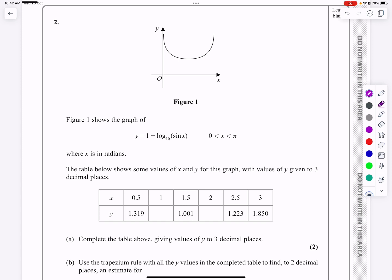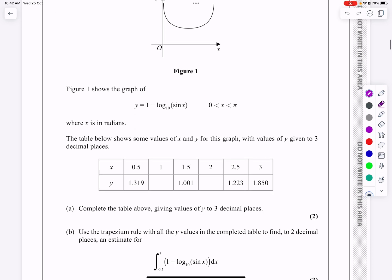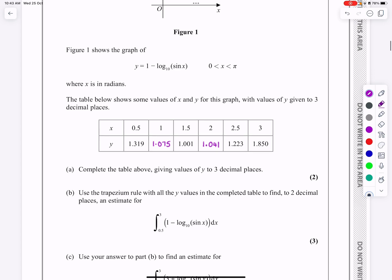It says we've got this function here, 1 minus log base 10 sine x, and for part a, it says, can we just fill in these two values using that function? So that's not difficult. If you do 1 minus log 10 sine 1, remembering that the angle is in radians, we get 1.075 there, and if we do the same thing with 2, we get 1.041 there. Just make sure your points are nice and clear. Yes, that's part a, no problem with that.